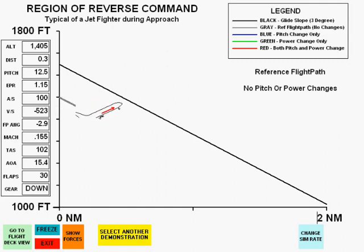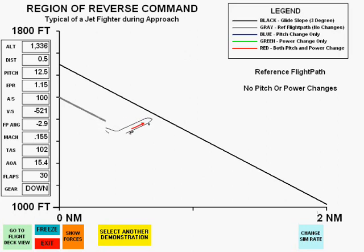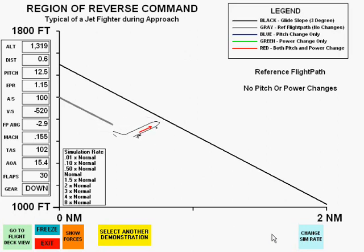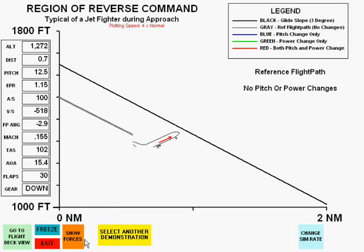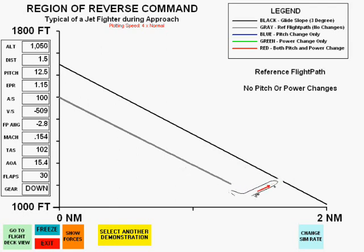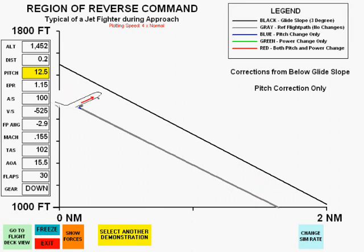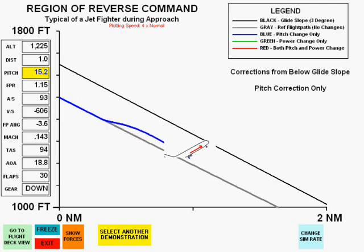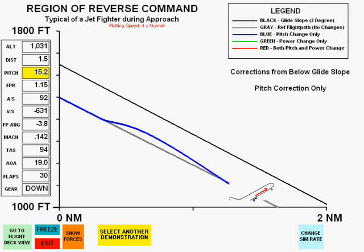The initial plot is parallel to the glide slope, and no pitch or power changes are being made. We will now increase the plotting rate to four times its normal value. The first correction will be with pitch only. Notice a slight path change toward the glide slope, but then as speed drops off, the flight path deteriorates and goes away from the glide slope.